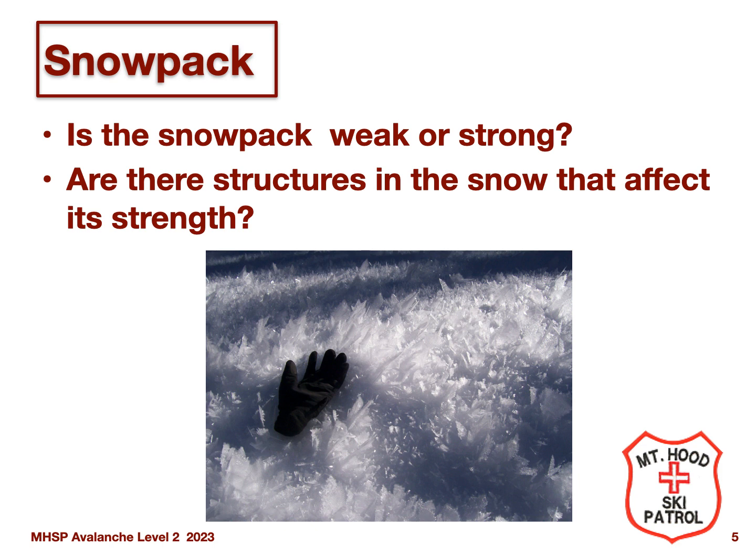The second leg of the avalanche triangle is snowpack. We'll look much more deeply into snowpack structure in subsequent modules. But the key question is the same: is the snowpack stable or unstable? What are the structures in the snowpack that affect snowpack stability? Do we have a consolidated layer over a weak layer that could result in a slab avalanche?